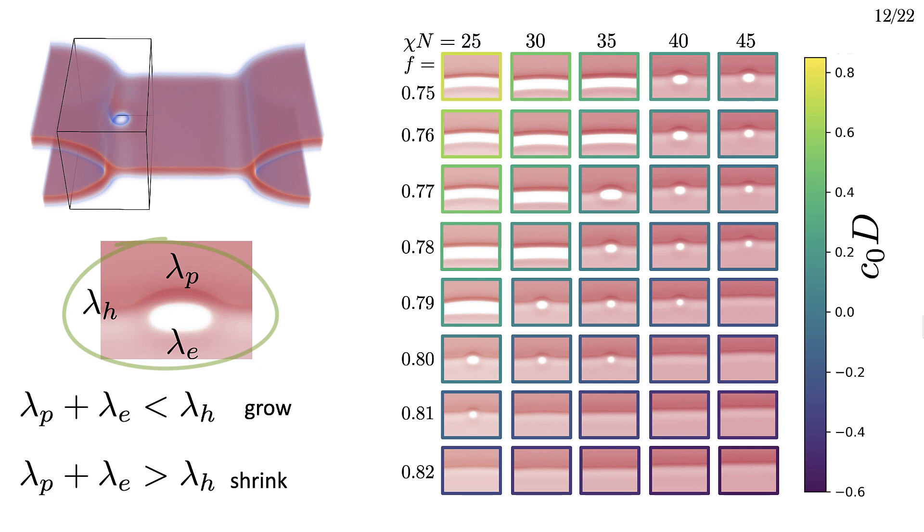Consider a pore that looks like this. The appropriate line tensions are lambda p, lambda e, and lambda h. These give the free energy per unit length associated with forming whatever type of interface. The region with the pore thus has a free energy lambda p plus lambda e times its length, and the threefold junction has a free energy lambda h times its length.